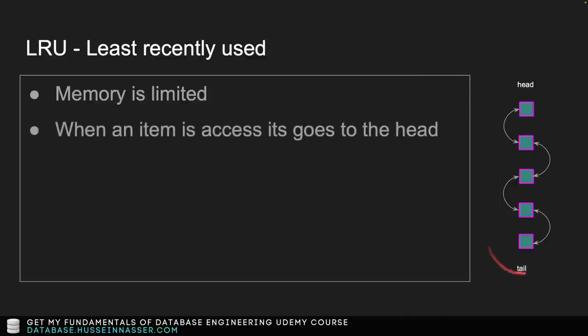The LRU is implemented using a linked list. There is a head and a tail, and every item is linked to each other. Every slab class has its own LRU. If you access an item that happens to be at the tail, it gets popped back to the head. There is a cost to accessing an item — you have to re-link the chain.